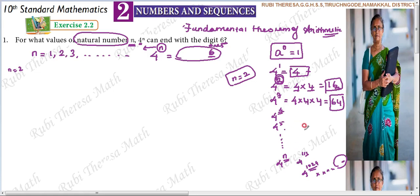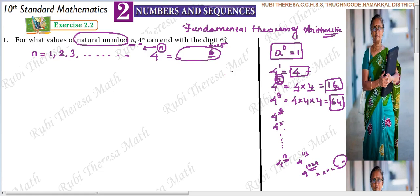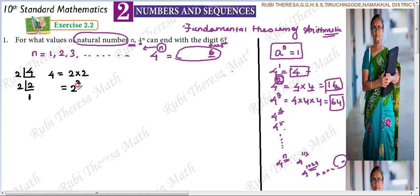Now we apply the Fundamental Theorem of Arithmetic: we do prime factorization for the number 4. The prime factor is 2. 2 times 2 is 4, so 4's prime factorization is 2 into 2, which is 2 to the power 2. So the prime factor of 4 is 2.